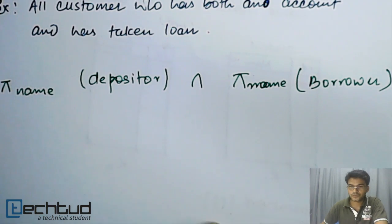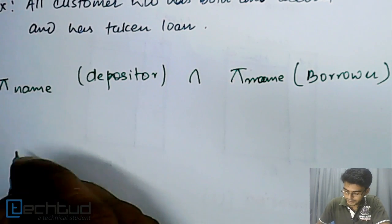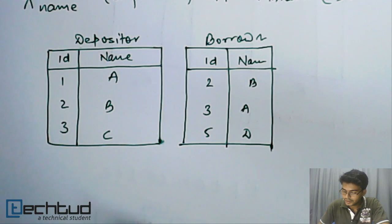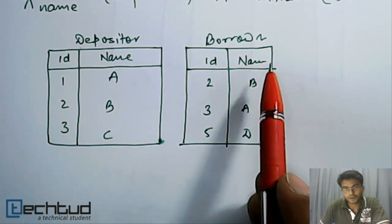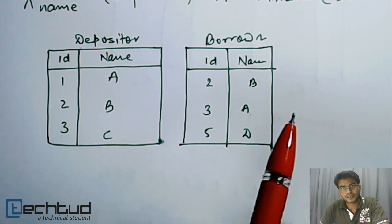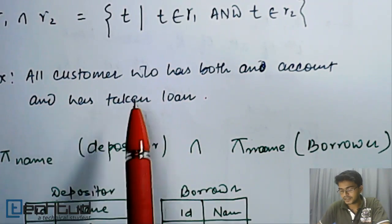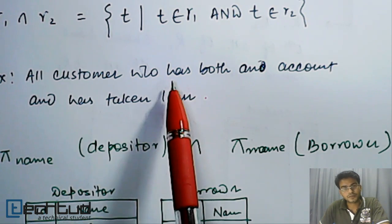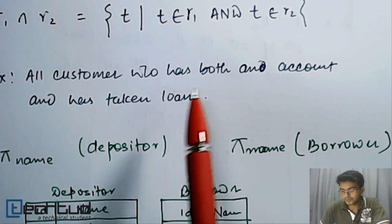So quickly we will see a table here. Let's consider these are the two tables. Here we have depositor and borrower, and we have to find out intersection between depositor and borrower. That is, the question is that the given customer who has either an account or has taken a loan.